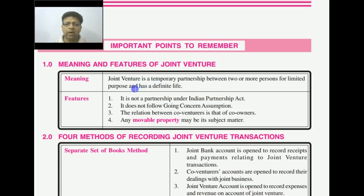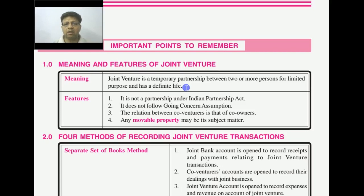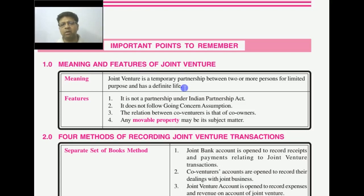We have a joint venture for a particular event. The joint venture is not an ongoing concern — the life is limited. For example, you have to make a road or a building. Some people start the work, complete it, and all the people distribute their shares. So this is not a long-term concern; it has a definite life and is maintained for limited purposes.